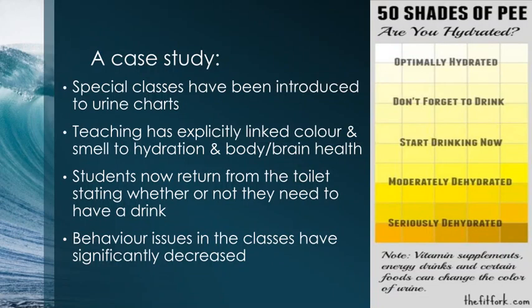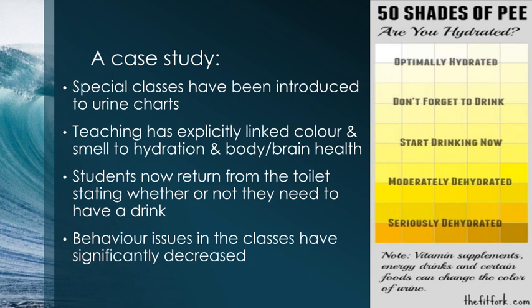Over about a term, children and young people were able to self-regulate their hydration — knowing when they were hydrated and when they needed to drink. Behaviour issues in those classes and preschools significantly decreased as children became better hydrated. Prior to the intervention, most children thought urine should be yellow and smell like wee; they learned it should be almost clear and have no smell. Where children had not yet been toilet trained, being fully hydrated made it much easier for them to feel when their bladder was full, making toilet training much more accessible.